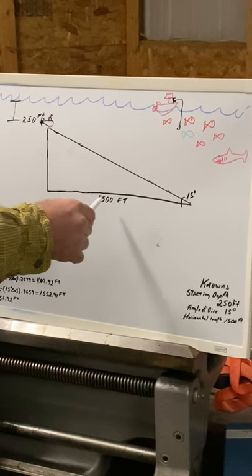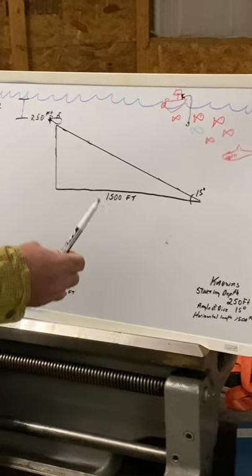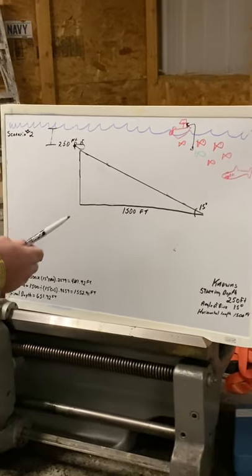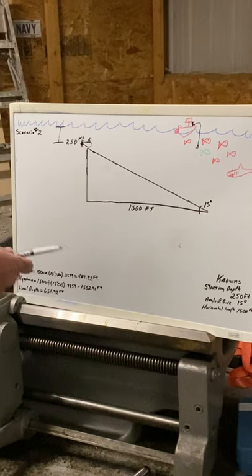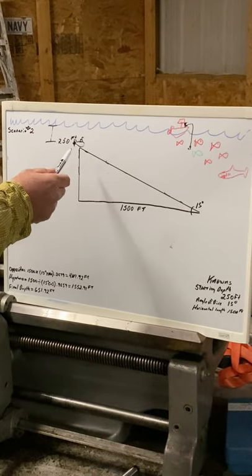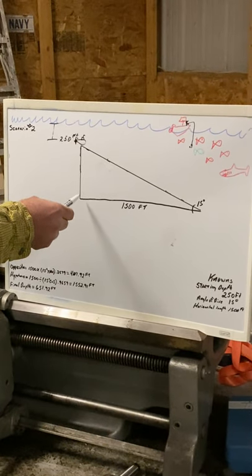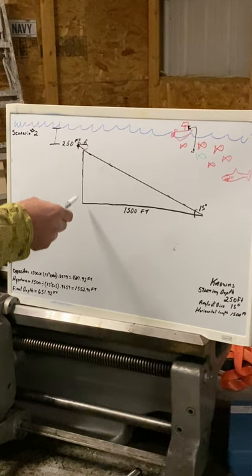It has a horizontal traveling distance of 1,500 feet, so I need to know what my final depth is at the end of the dive. I want to know what my opposite side length would be in order to find my final depth.